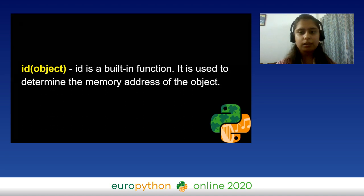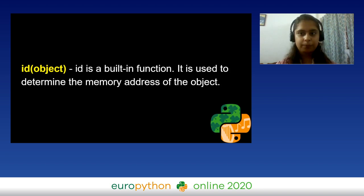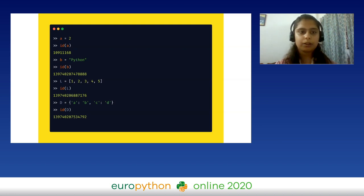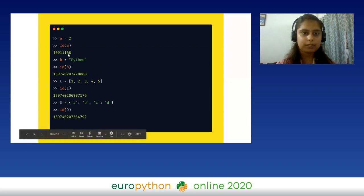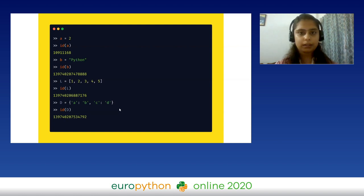How can we find that unique memory address? There is a built-in method in Python called `id()`, and inside the parentheses we pass in an object as parameter. So, if we do `a = 2` and then call `id(a)`, a unique memory address is returned. Similarly, we can do this for strings, lists, dictionaries, or any Boolean value, and we would get a unique memory address each time.